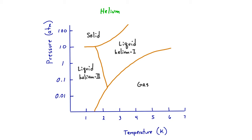It's only at very low temperatures, like one or two Kelvin, where you can get liquid helium, and solid helium requires very high pressure — hundreds of atmospheres — combined with very low temperatures to freeze helium into a solid. We can also see two triple points in this graph: one between liquid helium one, liquid helium two, and gas, and another between liquid helium one, liquid helium two, and the solid.